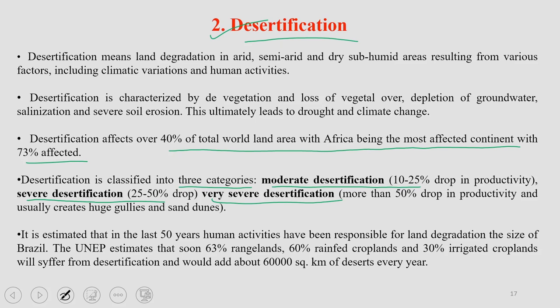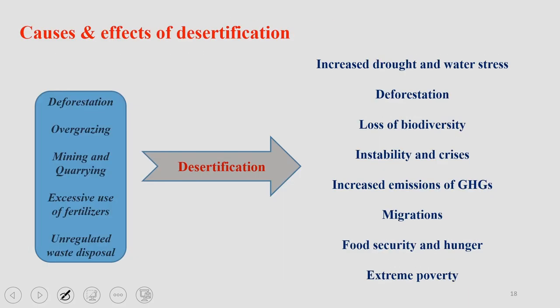It is estimated that in the last 50 years of anthropogenic activities, land degradation has taken place over an area equivalent to the entire land mass of Brazil. So you can imagine the scale — in the last 50 years, an area the size of Brazil has become desertified, representing a significant impact on human civilization. Desertification must be taken care of.